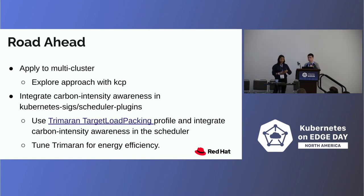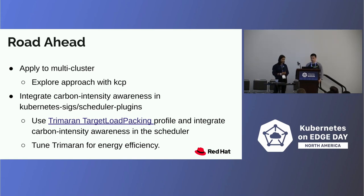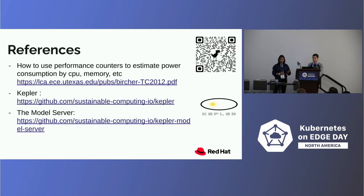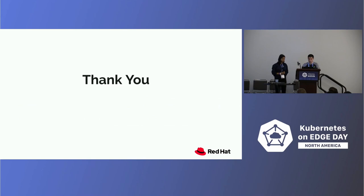The road ahead is to apply this approach to a multi-cluster scenario, exploring how to do that with KCP, and integrate carbon intensity awareness into the Kubernetes scheduler profile. Rather than leaving the scheduler untouched, we want to introduce carbon intensity into the scheduler itself — exploring options with Trimaran's target load packing, which does an excellent job optimizing nodes for workloads. We'll then take that scheduler and introduce carbon intensity into it. References and a QR code linking to our GitHub organization and the white paper are available for anyone interested.